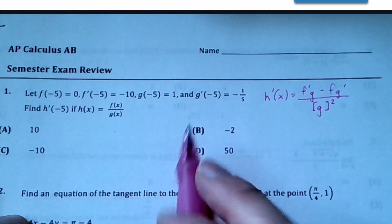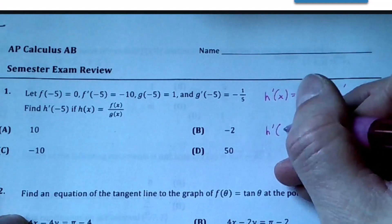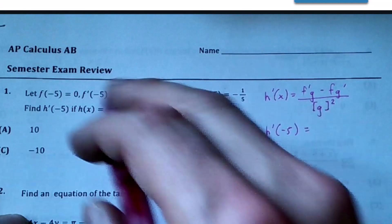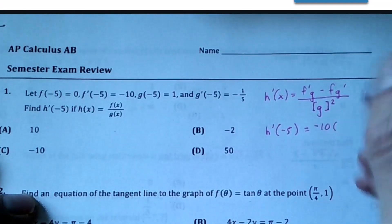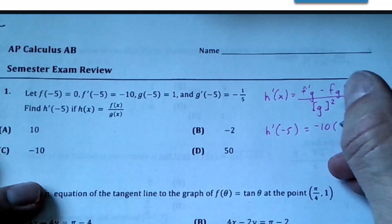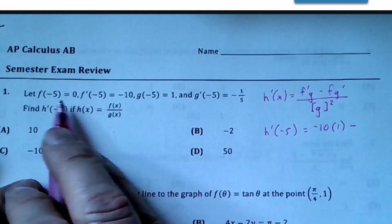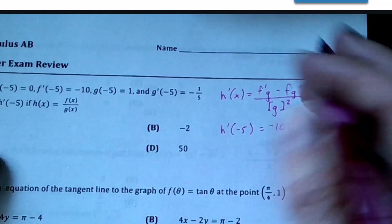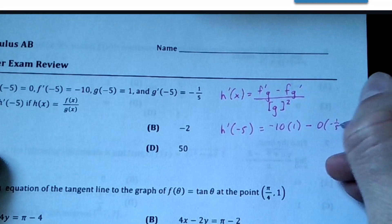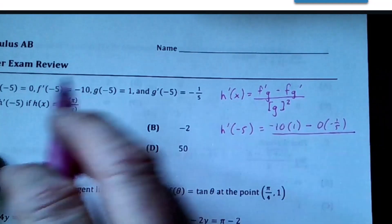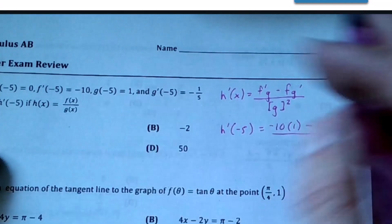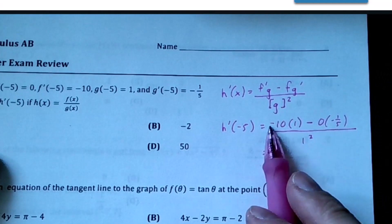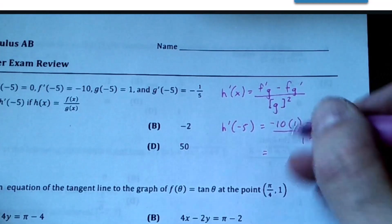At h'(-5) we take the derivative of the first but not the second, that's 1, minus the derivative of the first times the second. The derivative is 0, so I don't even care what I write, but technically it is f(-5) times -1, all over g(-5) squared. The output is 1 squared, so we get -10 divided by 1 squared. Our answer is C, -10.